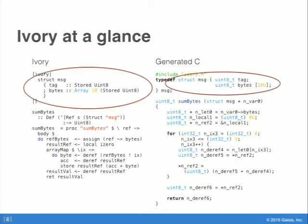Let's have a deeper look at this structure declaration. There's a pretty close correspondence with the generated C, but the types in the Ivory structure declaration look a little funny. They have, for the tag constructor, this 'stored' additional type constructor. Things that show up in structure declarations are area-kinded things rather than star-kinded things. In Ivory, 'area' is the kind of allocated memory — how we type a region of memory. 'Stored' is the way you take a star-kinded thing and lift it into an area-kinded thing. The 'bytes' field is typed as an array of 10 stored uint8s — 'array' is another area type which takes the number of elements and the area type of those elements.